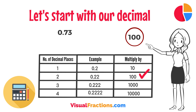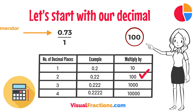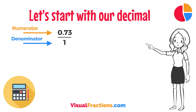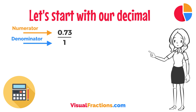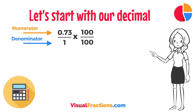To convert this decimal into a fraction, you initially put it over one, essentially treating the decimal as the numerator in a fraction where the denominator is 1. This sets up the conversion process where we multiply both the numerator, the decimal, and the denominator, 1, by 100 because there are two decimal places.